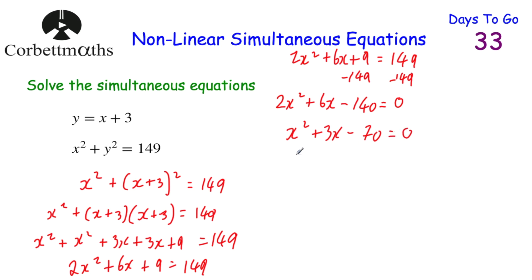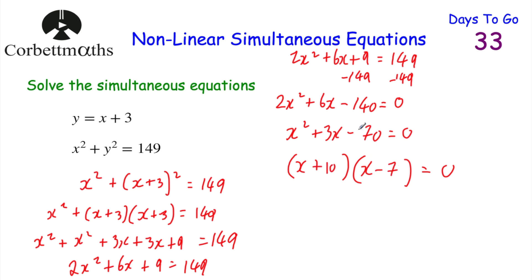Let's try to factorise the left-hand side. We put x in the front of both brackets. The two numbers must multiply to give negative 70 and add to give 3 — I'm thinking plus 10 and minus 7, because 10 times minus 7 is minus 70, and minus 7 plus 10 is 3. So either x equals minus 10, or x equals 7.